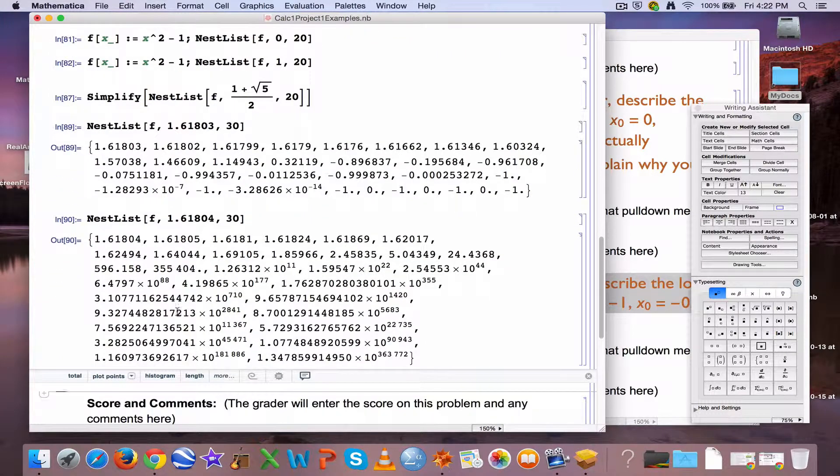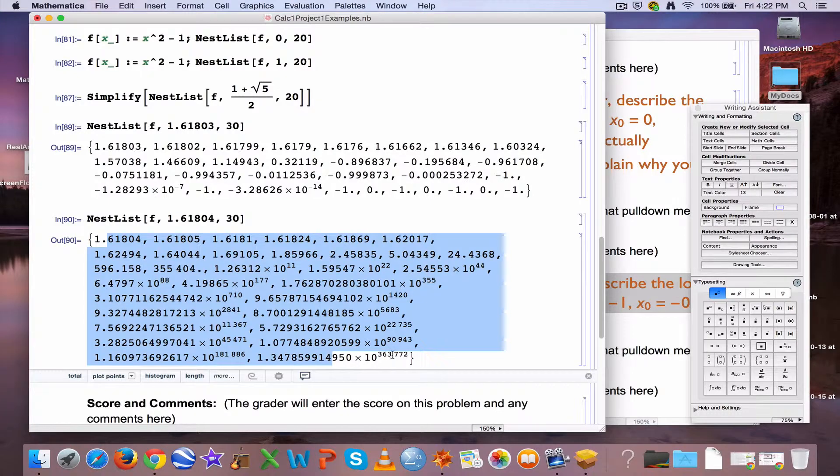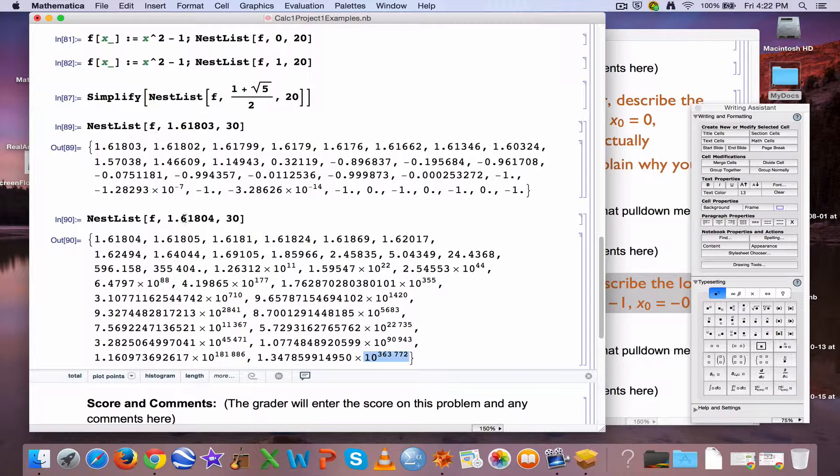What if I use the other one where I make the last number a 4? Yikes, something radically different. These numbers are going off to infinity. Look at that power. 10 to the 363,772 power. Yikes, really, really big.